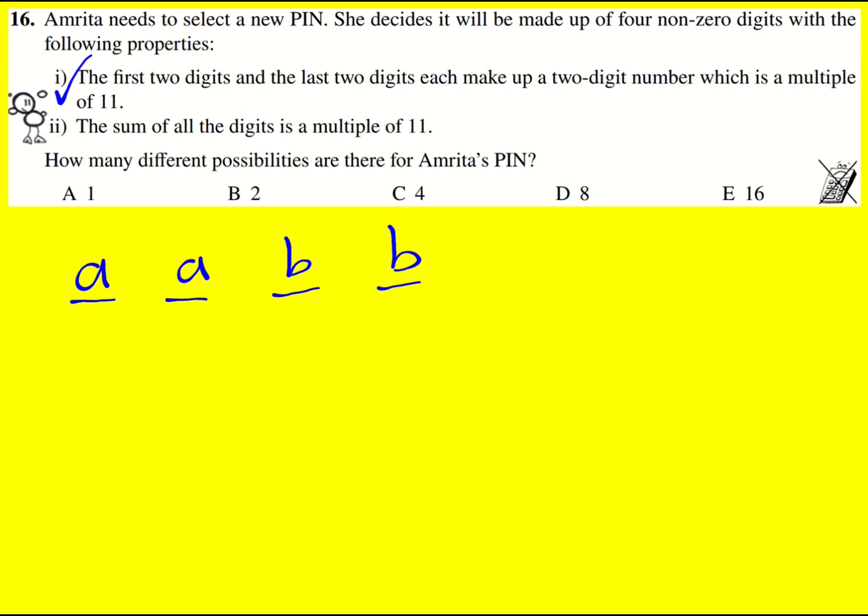Okay, so I've dealt with that for part one. And then we're also told that the sum of all the digits is a multiple of 11, so that's going to be 2a plus 2b is a multiple of 11. Now there's no way it can equal 11 because 2a plus 2b is an even number, so we can ignore that. So it must be 22.